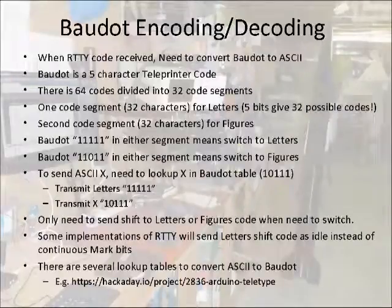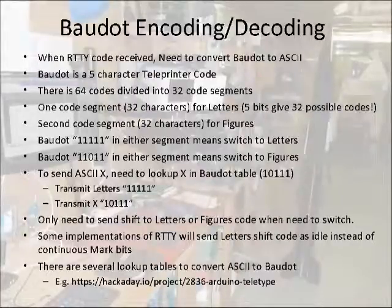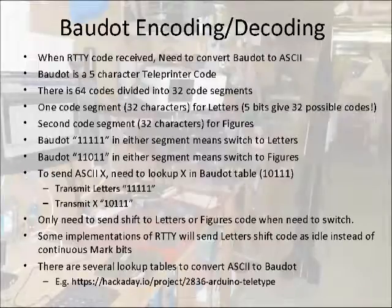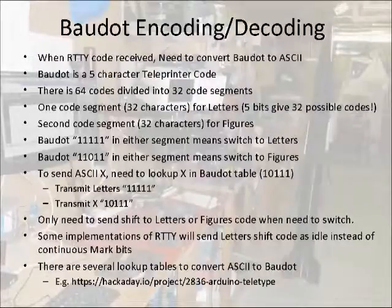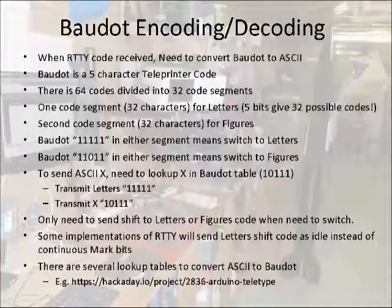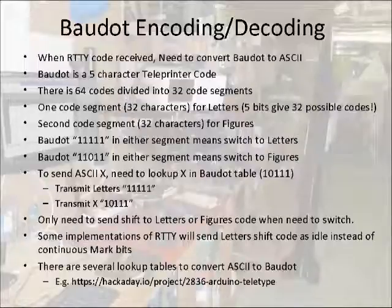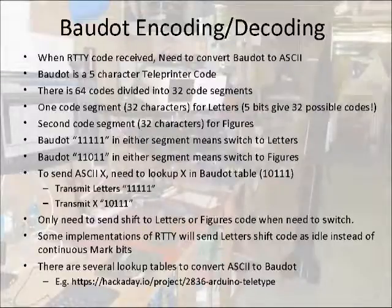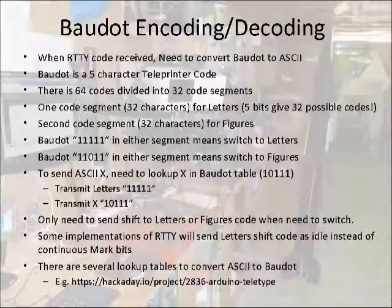Whenever ASCII data is transmitted using RIDI, it's first translated to Baudot, which is a five-character code. Baudot uses two 32-character tables: one for letters such as A to Z uppercase, and the other for figures such as numbers 0 to 9 or special characters. There's also a special code which tells the receiver to switch to letters or figures. For example, to send an alphabetical character, you would send a letters code, then send a Baudot code representing the character. If you wanted to send a number, you'd send a figures code, and then send a Baudot code representing the number. There are a number of Baudot lookup tables and techniques available on the internet, as well as several YouTube videos describing Baudot.